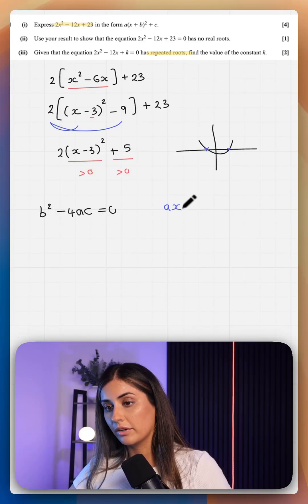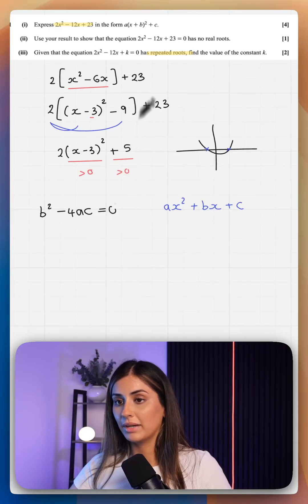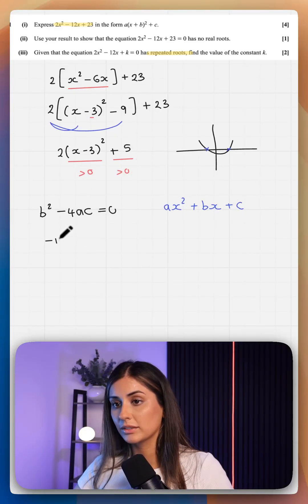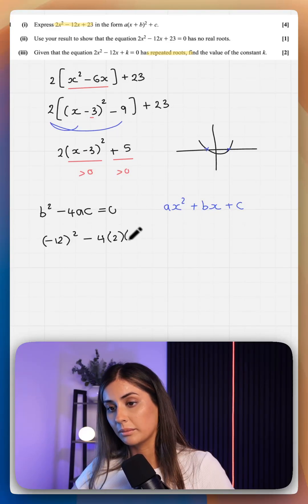Your a is your coefficient of x squared, your b is your coefficient of x, and your c is your constant. So let's whack that all in. b squared is minus 12 squared minus 4 times your 2 times your k, that's equal to 0.